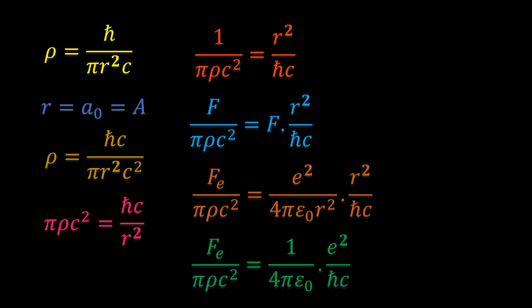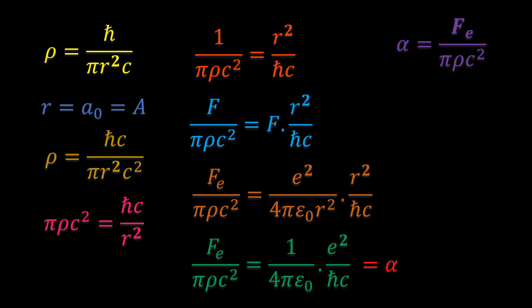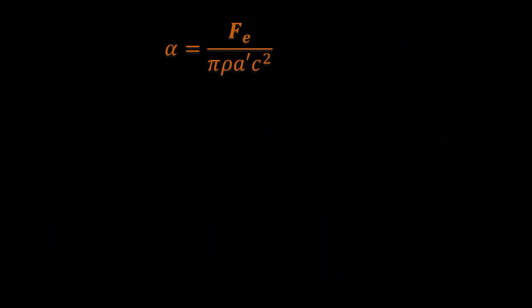Can you now recognize that the right-hand side is the expression for the fine structure constant alpha? So we have alpha equal to f subscript e over pi times rho times c squared. Don't forget our A' term that we have been ignoring — we need it for this ratio to be unitless so that the equation becomes homogeneous. So we slot it in. Therefore, we can also define the density of free space as a function of the fine structure constant.